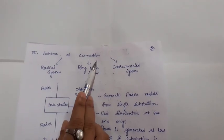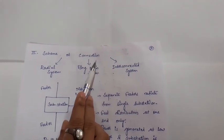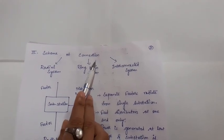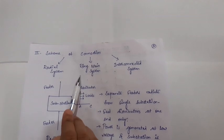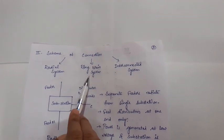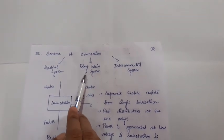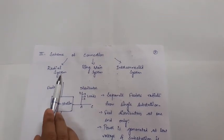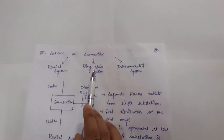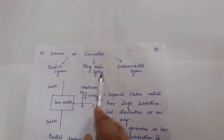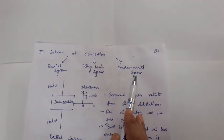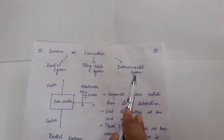Based on the scheme of connection, the distribution system is divided into three types: the radial system, the ring main system, and the interconnected system.